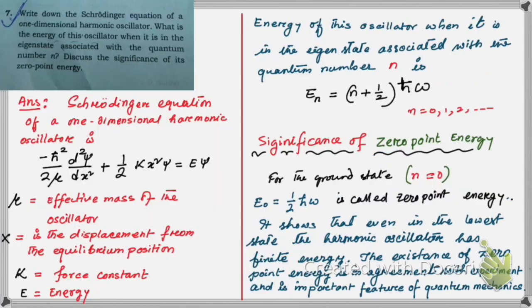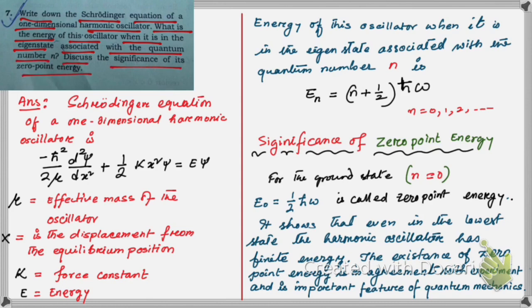Now let's move on to question number seven. Write down the Schrödinger equation of a one-dimensional harmonic oscillator and what is the energy of this oscillator when it is in the eigenstate associated with quantum number n. Discuss the significance of its zero-point energy. Here is the Schrödinger equation of a one-dimensional harmonic oscillator, along with the meaning of the terms used in this equation.